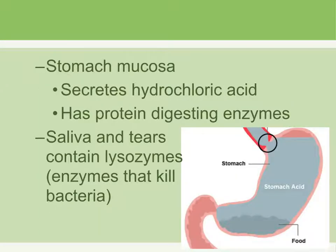Stomach mucosa produces hydrochloric acid, giving a pH of less than 2, which is a very strong acid that can sterilize and kill many pathogens. Food material containing proteins that could cause allergic reactions can also be destroyed by enzymes in the stomach. Saliva and tears contain lysozyme, which is an enzyme that kills bacteria as well.